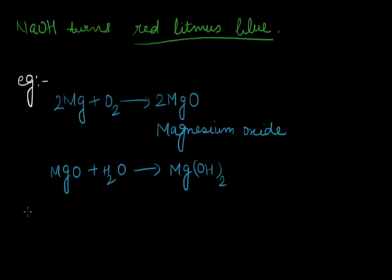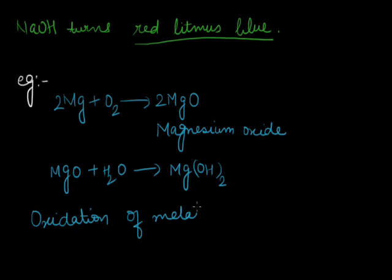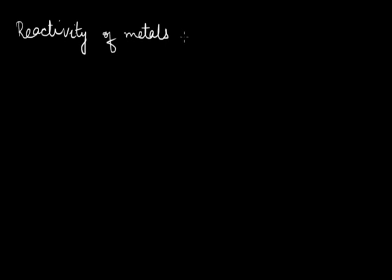When a metal combines with oxygen, it loses its valence electrons and forms positively charged metal ions — we say that oxidation of the metal occurs. However, all metals do not react with oxygen with equal ease, so we consider the reactivity of metals with oxygen.